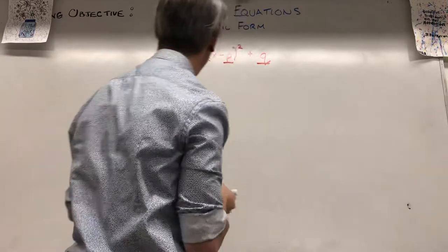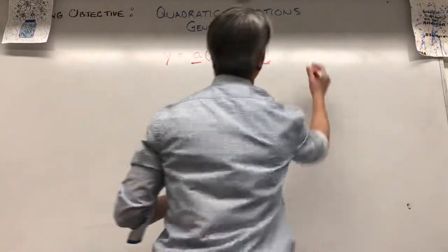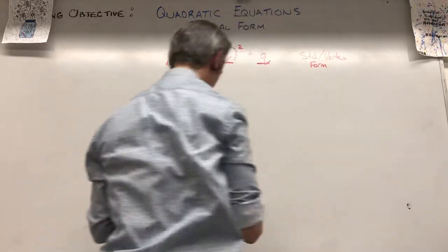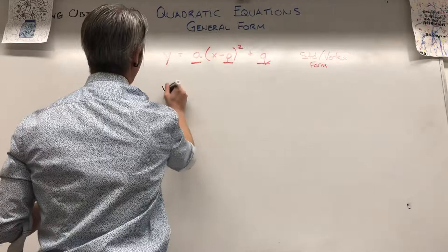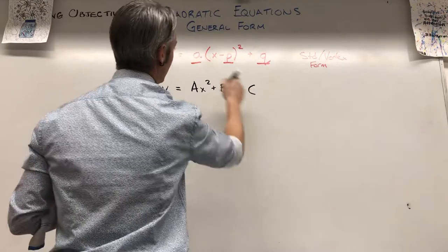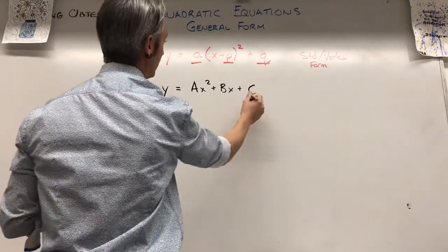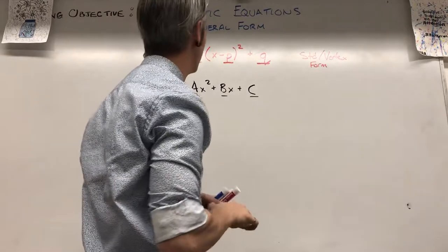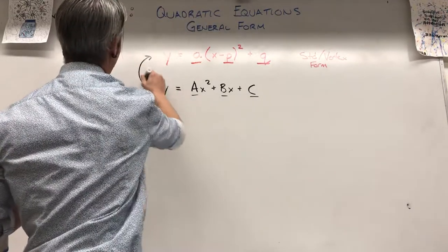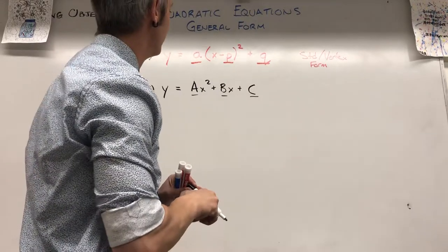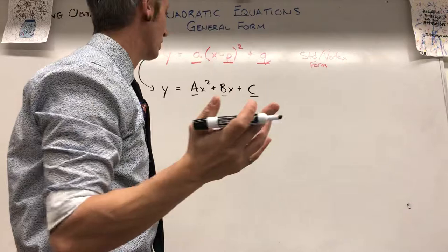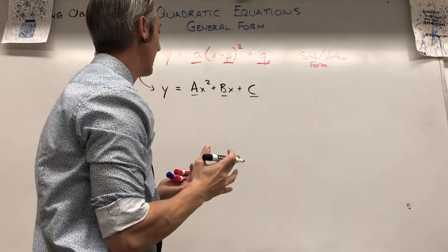Standard form is very useful because each letter has direct significance. General form, which you've probably seen in previous years, is ax² + bx + c. We essentially expand out the squared term and collect like terms, where a, b, and c are constants — actual numbers. These two forms are related and both have their uses, but for right now vertex form is our more powerful form.